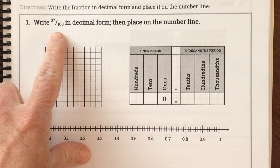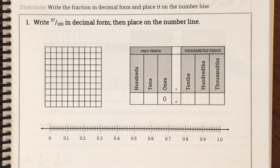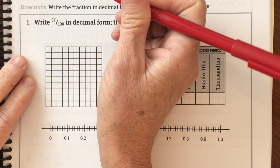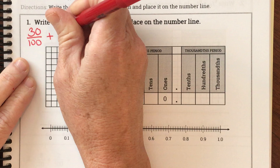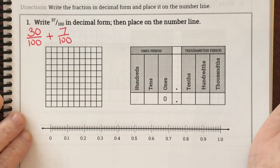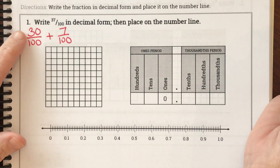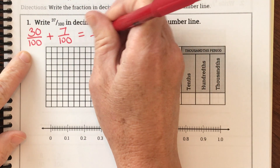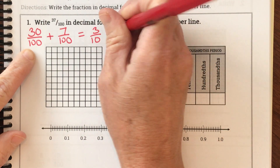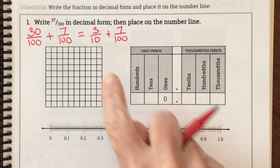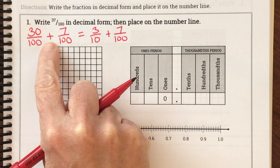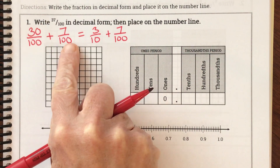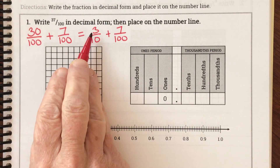Here is my first problem: write thirty-seven hundredths in decimal form, then place it on the number line. Step one — decompose the fraction. I know that thirty-seven hundredths is thirty hundredths plus seven hundredths. And I also know that thirty hundredths is the same as three tenths. So they want me to decompose the fraction into tenths and hundredths: three tenths plus seven hundredths.